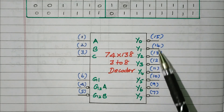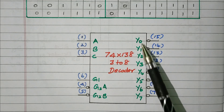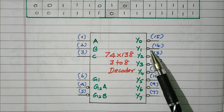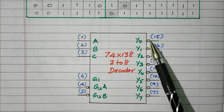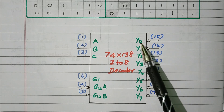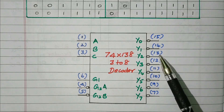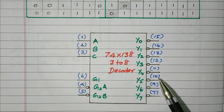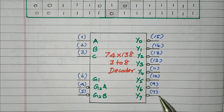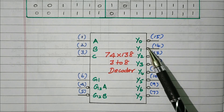There are 8 possible outputs Y0 to Y7, and all are inverted. The pin numbers for the outputs are: Y0 at pin 15, then 14, 13, 12, 11, 10, 9, and Y7 at pin 7. So these are all the outputs, and they are active-low.